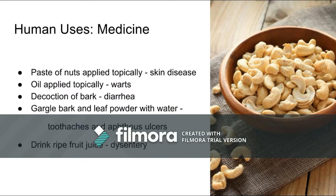Cashews are also used for a wide array of medicinal uses. A paste made from the nuts can be applied topically to improve some skin diseases, and the oil can also be applied topically for warts. A decoction of bark in water is used for diarrhea, or gargled for toothaches and ulcers. The ripe apple juice is taken for dysentery.